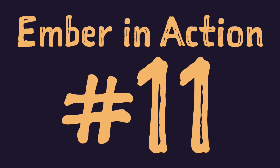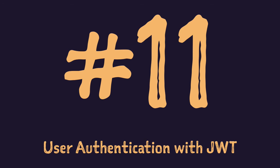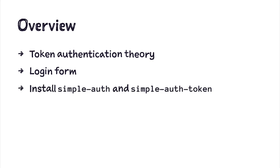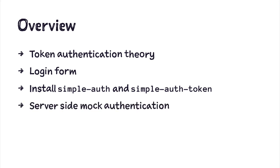Welcome to Ember in Action series, episode 11: user authentication. In this episode we'll implement token authentication using JWT, which stands for JSON Web Token. First we'll talk about the theory of how token authentication works. Then we'll create a login form with route, template, and component. We'll use simpleAuth and simpleAuth-token packages to implement authentication, create a mock server to provide a JWT token, and make login and logout links appear in the navbar depending on whether the user is authenticated.